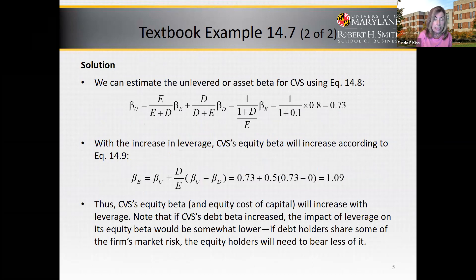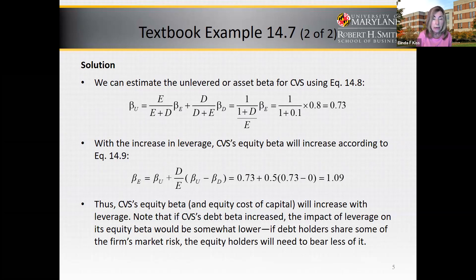The asset beta is the percent of equity times the beta of equity, plus the percent of debt times the beta of debt. Remember, the debt beta is assumed to be 0 here, so the equation reduces to the percent of equity multiplied by the equity beta. Using the original debt-equity ratio of 0.1, the percent of equity equals 1 divided by (0.1 + 1), which equals 0.9091. Multiplying by the equity beta of 0.8 gives an asset beta of 0.7273.